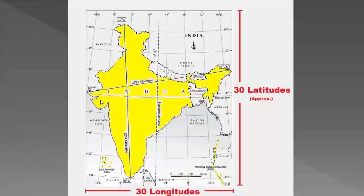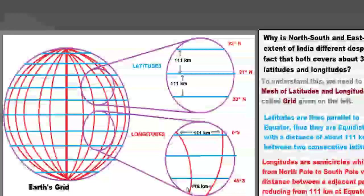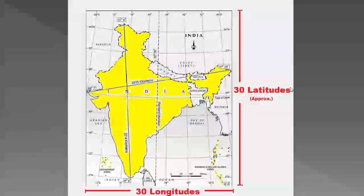That is why the north-south distance from 8 degrees 4 minutes north to 37 degrees 6 minutes north — these are parallel latitude lines — if you multiply 30 latitudes by 111 kilometers, you get about 3,300 kilometers, and the actual distance is 3,214 kilometers. For the east-west extent, from 68 degrees 7 minutes east to 97 degrees 25 minutes east, the distance is 2,933 kilometers, because as you move towards the pole, the distance between longitudes decreases. That is why the north-south extent appears bigger than the east-west distance.